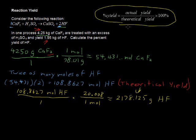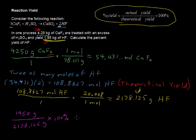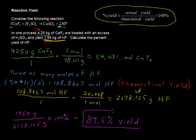Using the percent yield formula, let's plug and chug. Our actual yield is 1.95 kilograms, or 1,950 grams, divided by our theoretical yield of 2,178.125 grams, multiplied by 100%, and that gives us — rounding here — 89.5% yield. Maybe that's good, maybe that's bad for this process of making hydrogen fluoride, but we have not reacted everything. We've gotten 89.5% of what we theoretically expected. If you found this video helpful, consider liking it or sharing it with a friend.